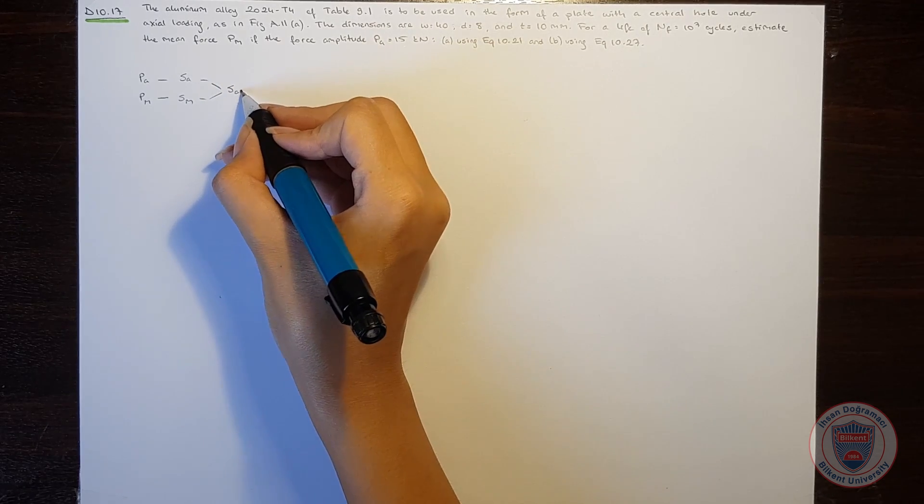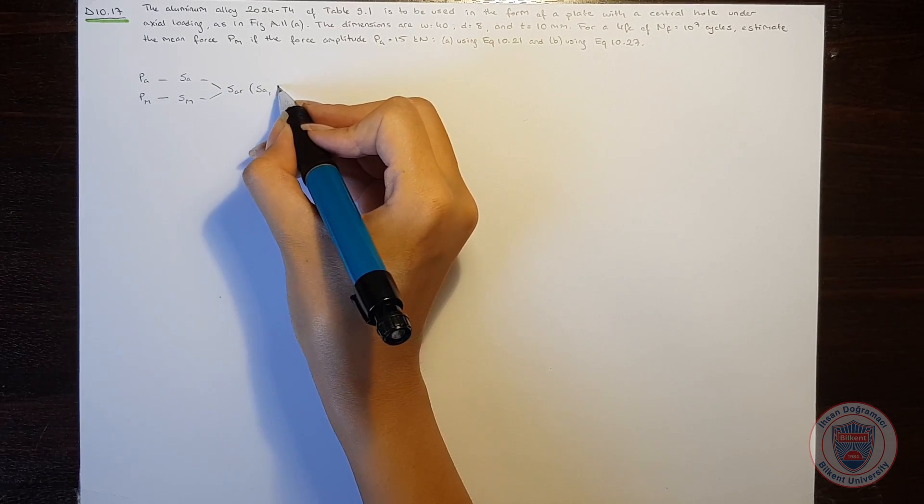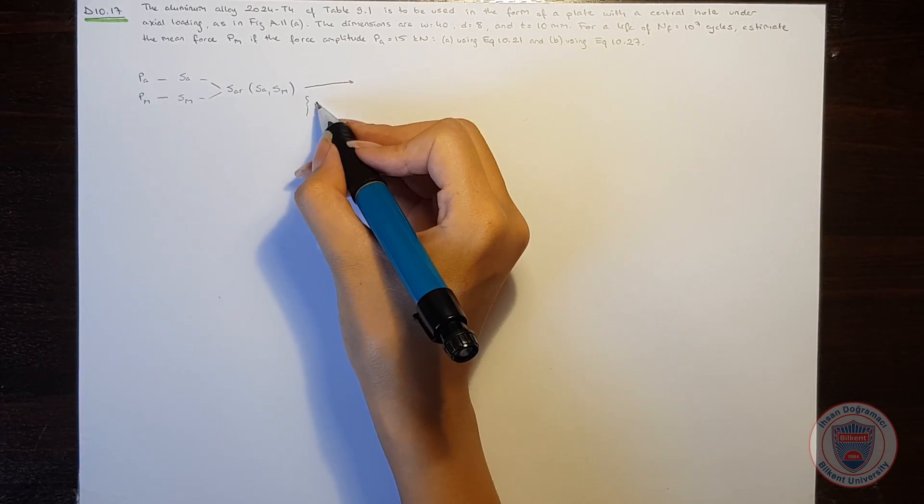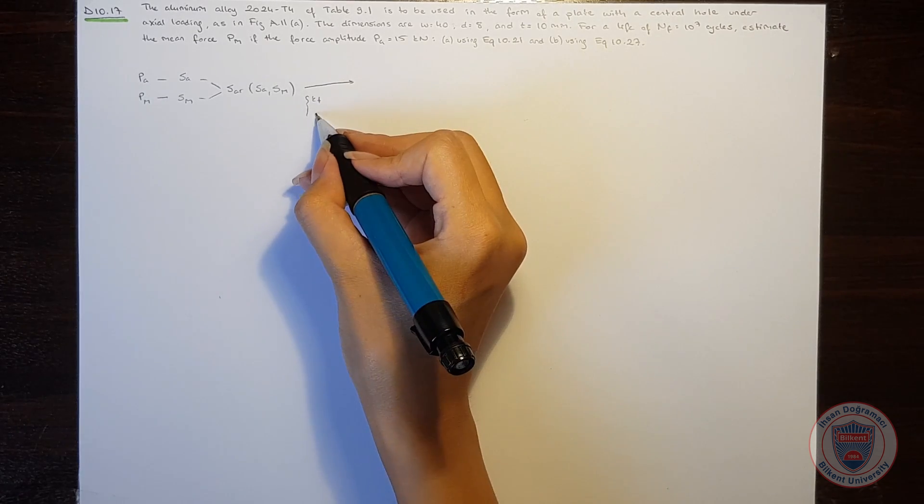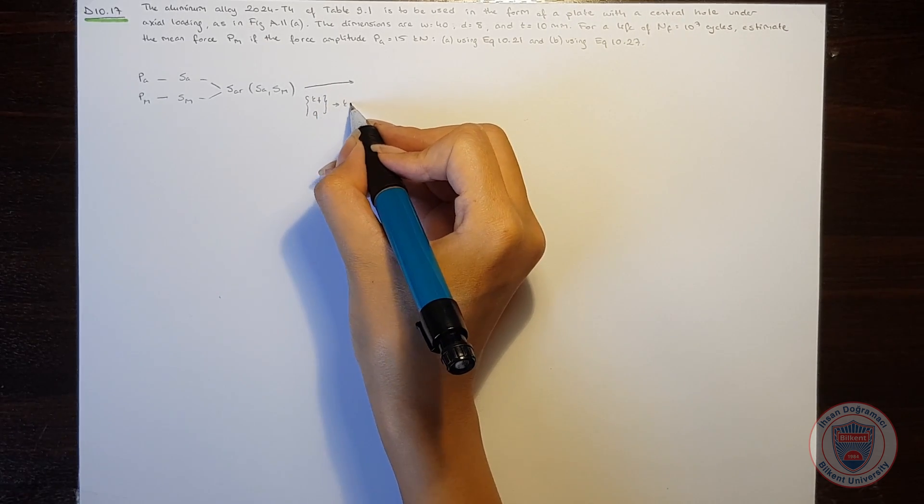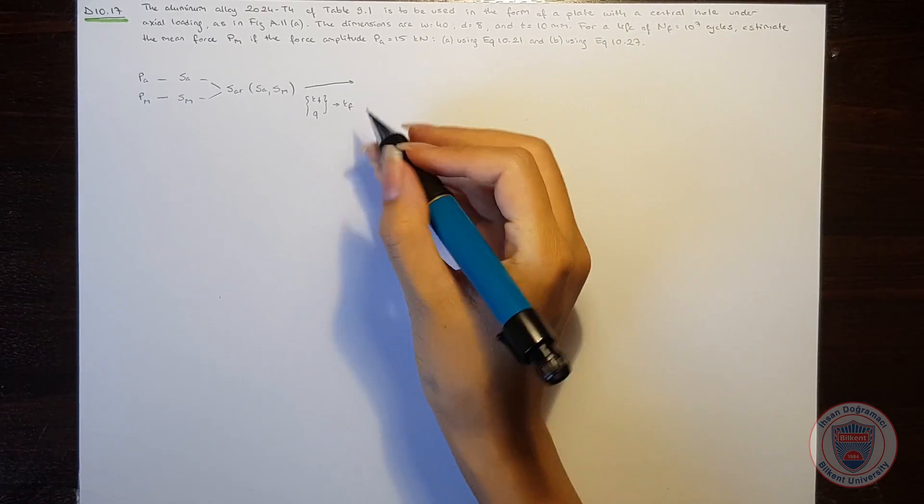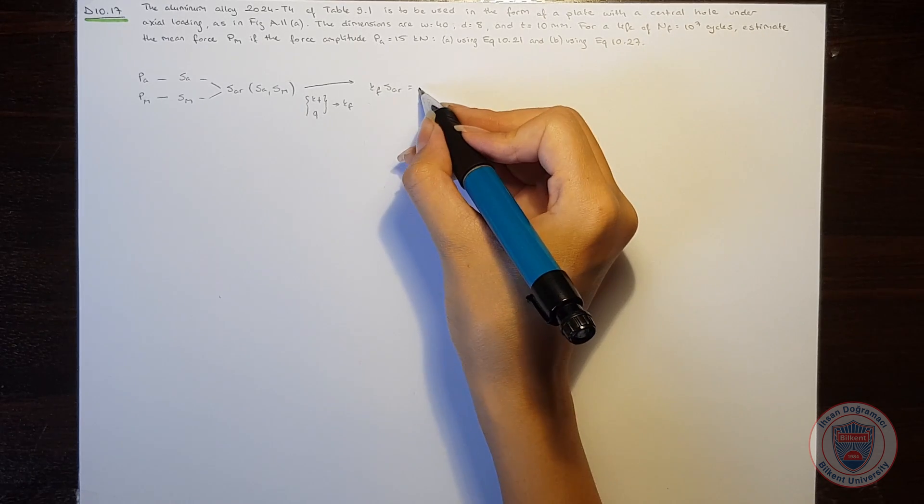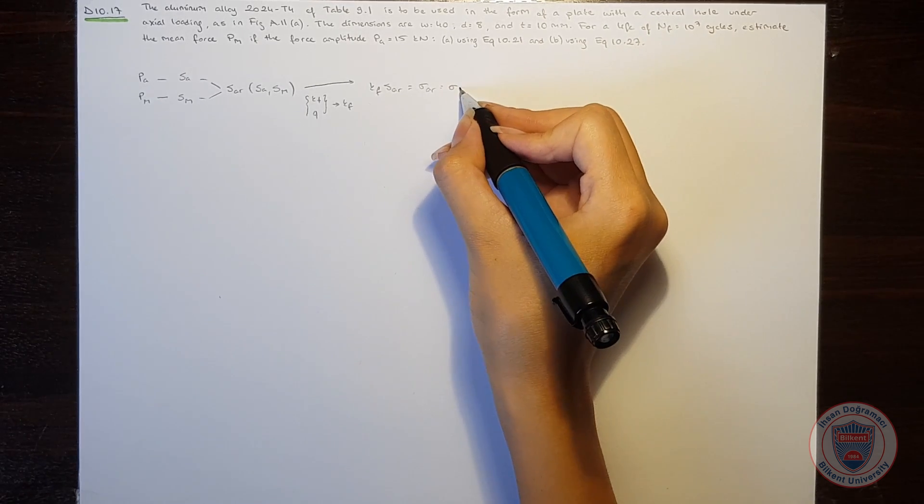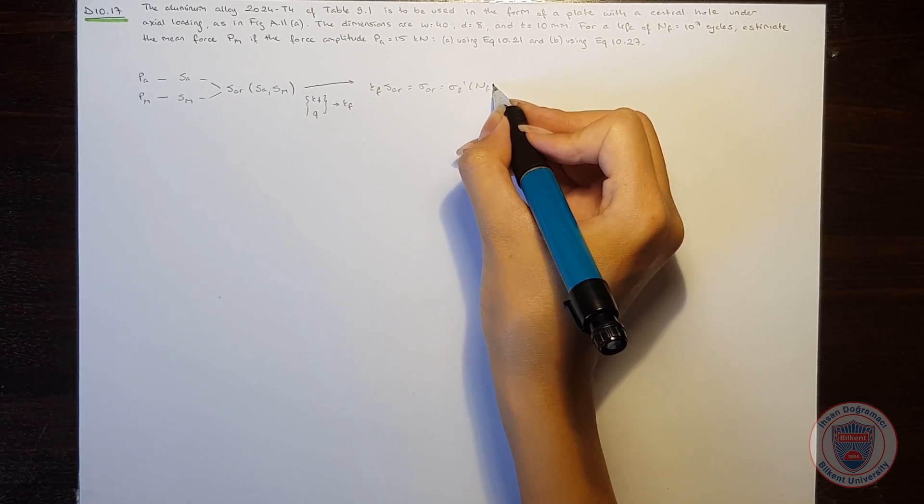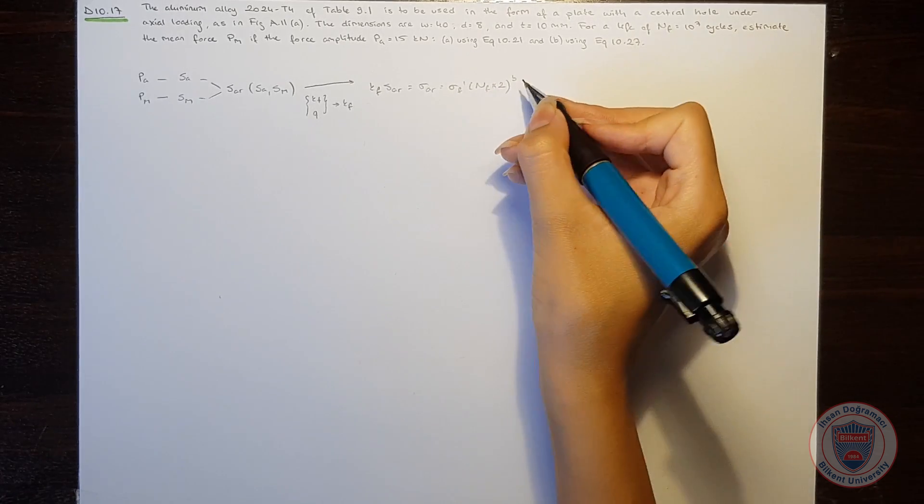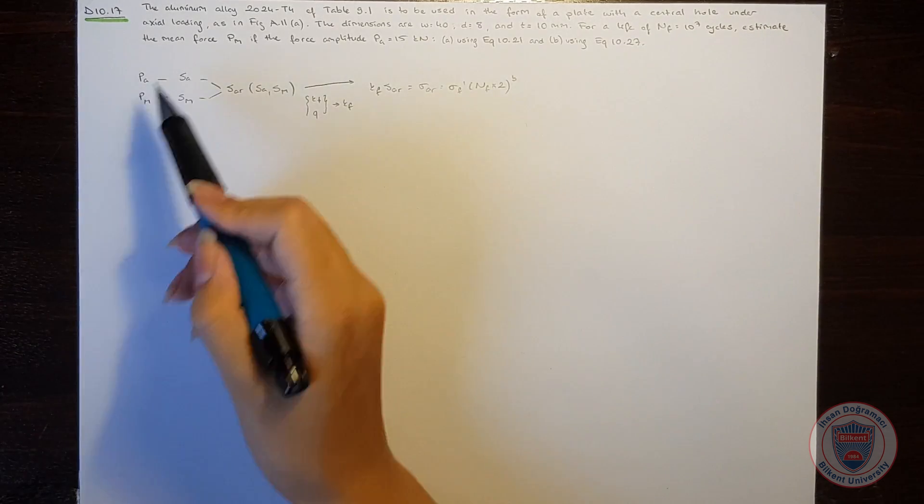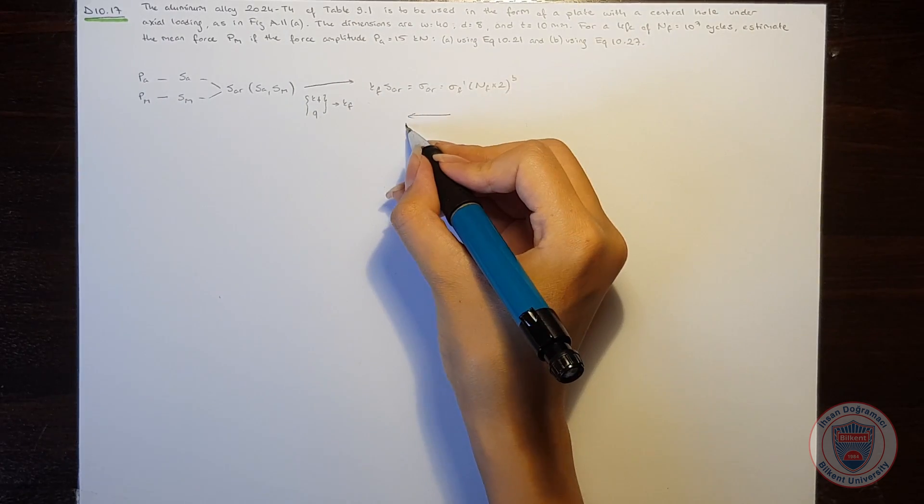Then we would find SAR which is a function of SA and SM. And then by using the stress concentration factor and the notch sensitivity, we would calculate KF which is the fatigue notch factor and then we would use the Basquin equation and we would find the number of cycles. But in this case, since we don't know PM, we will work backwards.